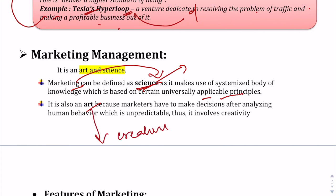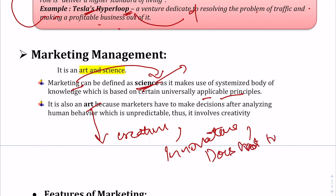Art is something creative and innovative that does not strictly cater to rules and regulations. Marketing is also an art because it works by observing human behavior — how consumers behave and the motivation behind their purchases. Since consumer behavior is unpredictable, marketers must take creative measures that do not follow a fixed set of rules. That is why marketing involves creativity and is also an art.